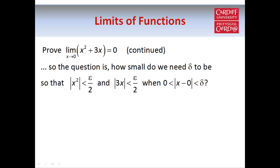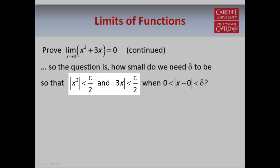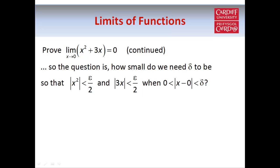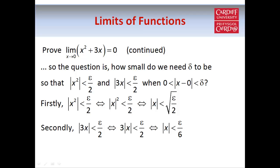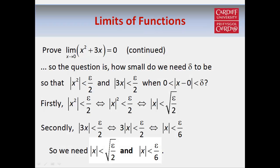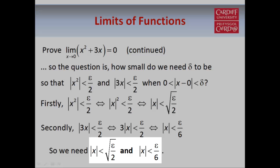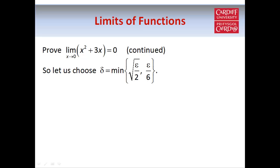The only problem is we now need to choose delta so that both inequalities are satisfied when x is within distance delta of 0. Starting with |x²| < ε/2, simplifying gives |x| < √(ε/2). Then from |3x| < ε/2, we get |x| < ε/6. So these are the two conditions on x that we need: |x| must be smaller than both √(ε/2) and ε/6. If we want it smaller than both, another way of writing that is to say we want it smaller than the minimum of the two.